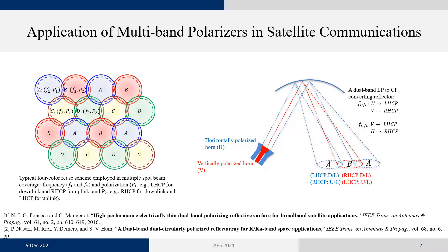On the application of these multi-band polarizers, we should look at the typical four-color reuse scheme employed in multiple spot beam coverage by satellite communication. In this scheme, four different beams are generated that are different in frequency and in polarization. The polarization of all these beams is in circular polarization, and each beam supports both downlink and uplink.